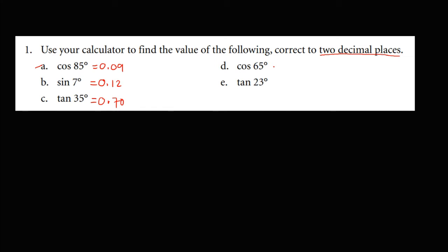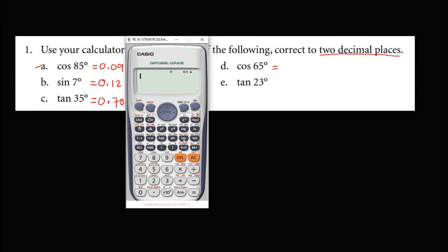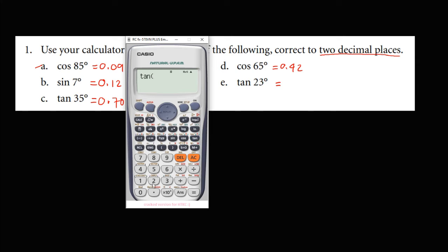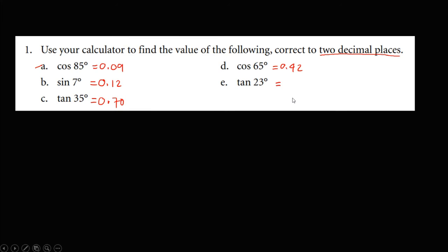For cosine 65 degrees, we have cosine 65 degrees equals — that's 0.42. So cosine 65 is 0.42. And for tangent 23 degrees, tangent 23 degrees equals — that's also 0.42. So tangent 23 is 0.42.